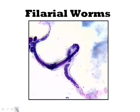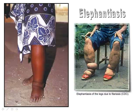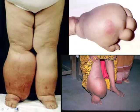Filarial worms cause elephantiasis. It's a parasitic worm that gets into the body of a human and causes severe bloating — everything looks bloated and quite severe. There are some very graphic images of elephantiasis out there; the ones shown here are among the less graphic examples.